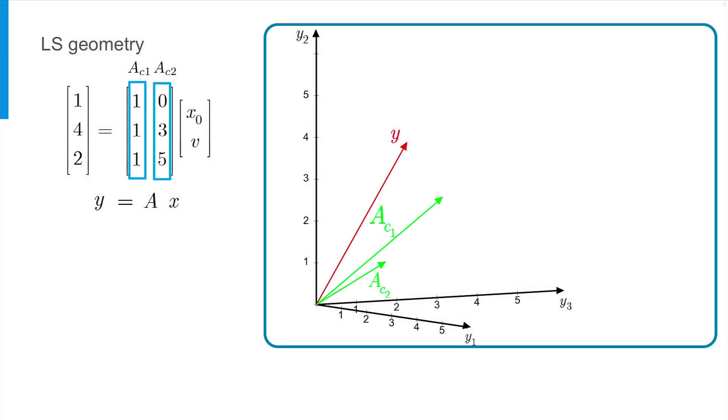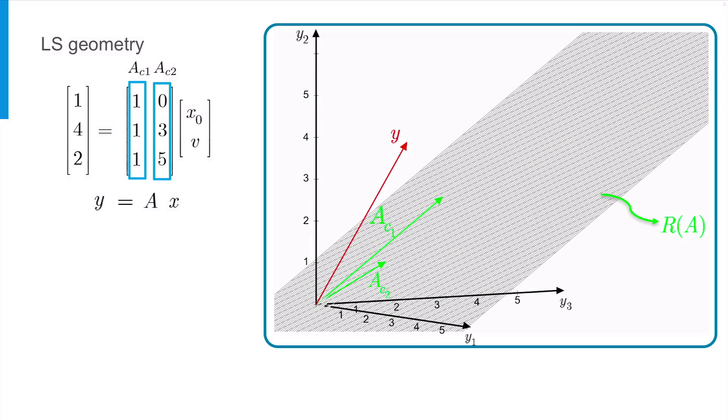the green vectors show the first and second column vectors of A. Now, what is the range space of matrix A? In fact, the range space is a plane that goes through these two green vectors. The plane is visualized as a gray mesh grid in the plot.